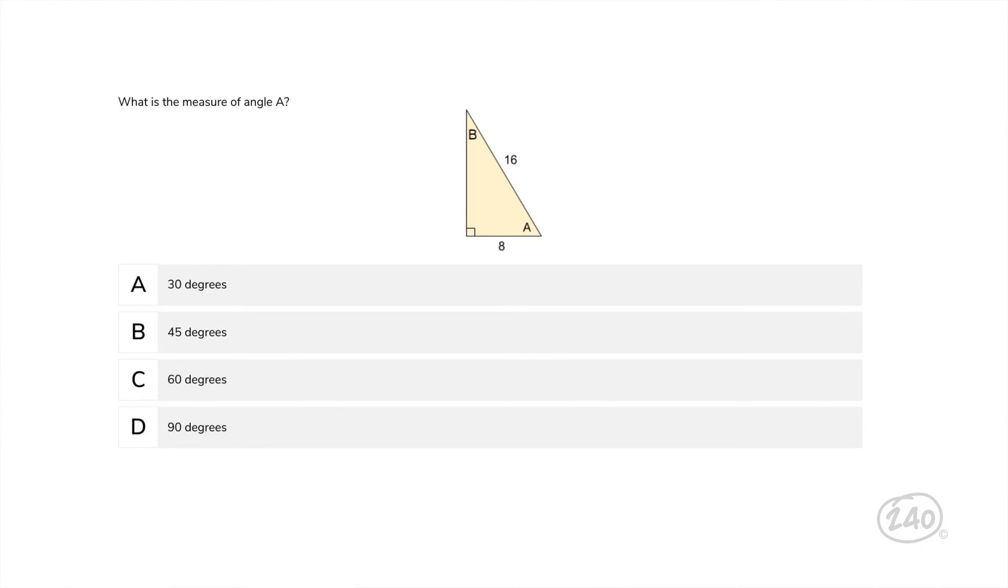What is the measure of angle A? Since we're given the measure of the adjacent side and the hypotenuse, we can do the ca part of SOHCAHTOA. The cosine of adjacent divided by hypotenuse, or cosine of 8 divided by 16, simplifies to cosine of 1 half, which is 60 degrees. So C is correct.